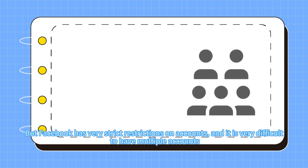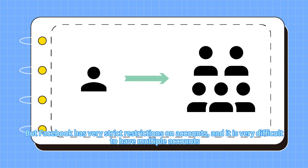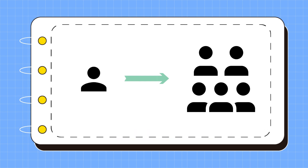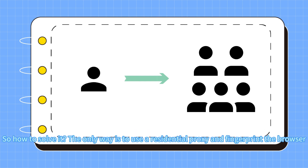But Facebook has very strict restrictions on accounts, and it is very difficult to have multiple accounts. So how to solve it? The only way is to use a residential proxy and a fingerprint browser.